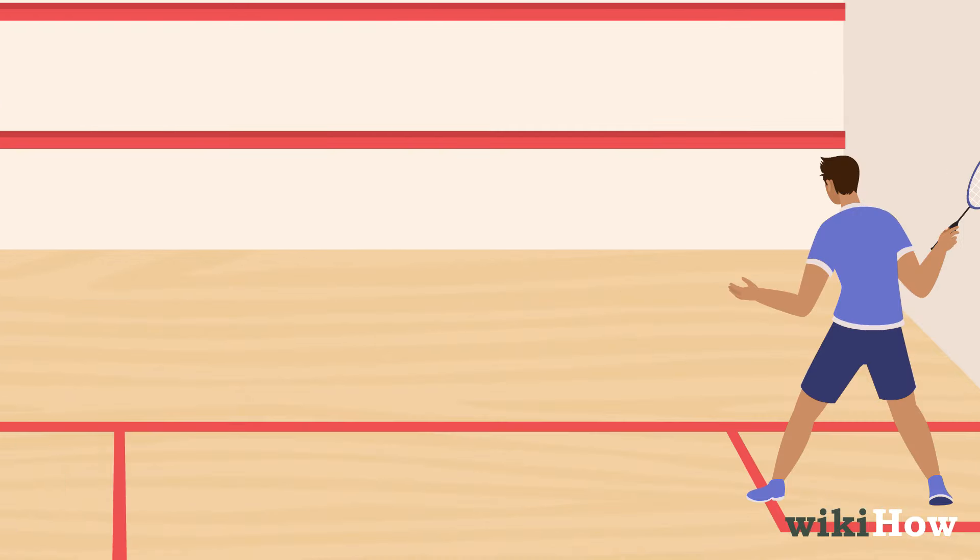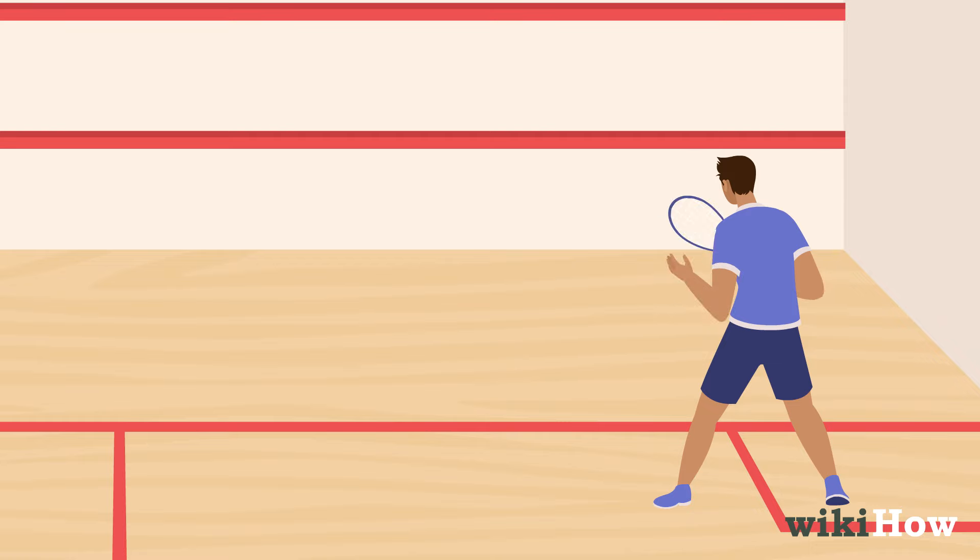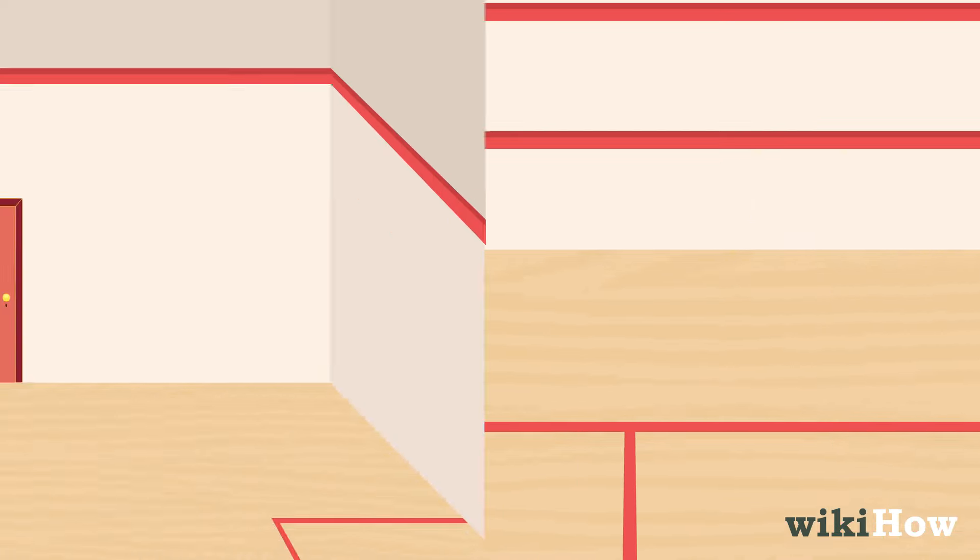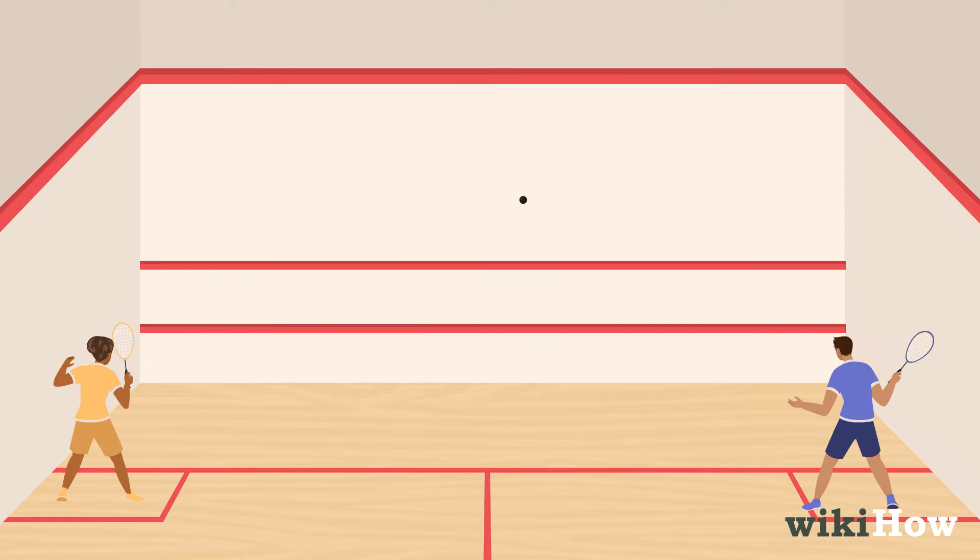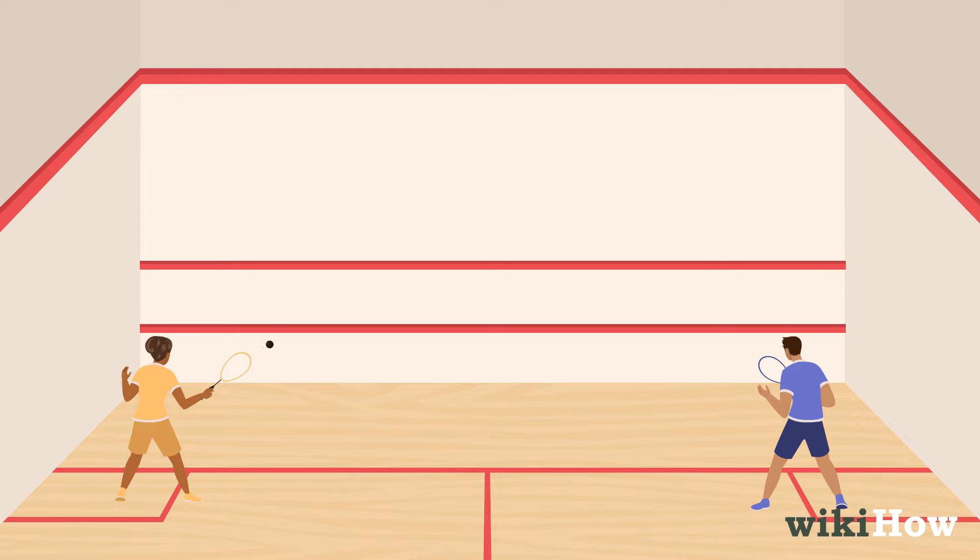Then, the opponent returns the volley using the same technique. After the initial serve, the ball can bounce off of the back or side walls of the court as the players volley back and forth. The last person to successfully hit the wall during a volley wins a point.